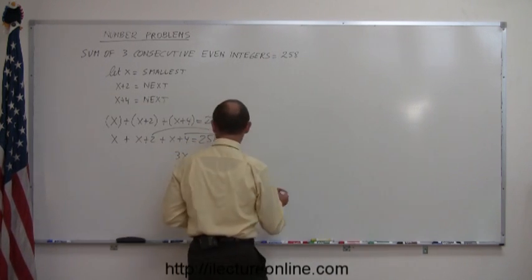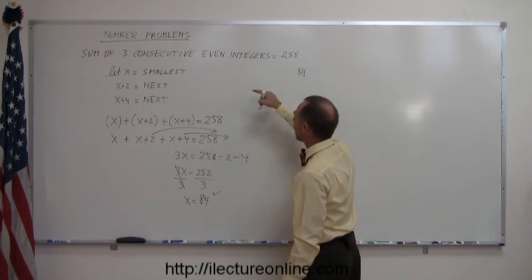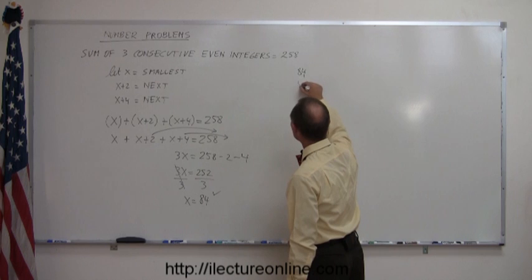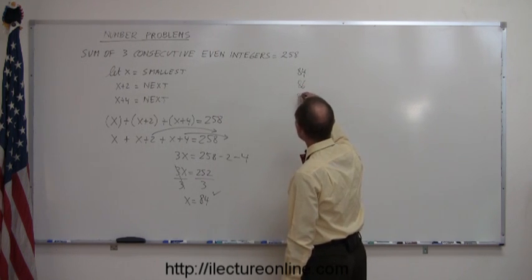So that means the three numbers are - the smallest, that's equal to 84. The next is 84 plus 2, which is 86. And the next, 84 plus 4, which is 88.